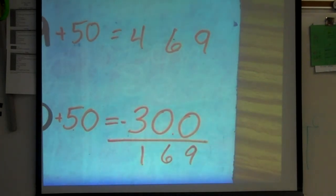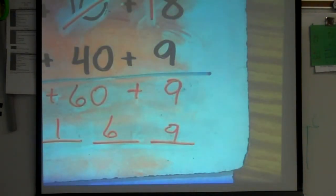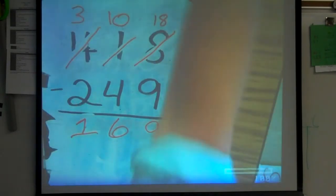Now, I'm in a great position to where all of my big numbers are on top. 469 minus 300. 9 minus 0 is 9. 6 minus 0 is 6. 4 minus 3 is 1. I'm getting the same answer for this algorithm as I did for the expanded form algorithm as I did for the algorithm that you and I learned when we were kids.